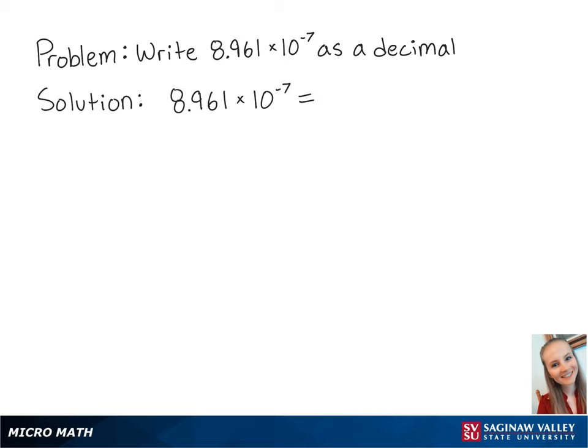For this problem, we're going to write 8.961 times 10 to the negative 7 as a decimal. Since 10 is raised to a negative number, this means that the number is small, and we're going to move the decimal to the left.